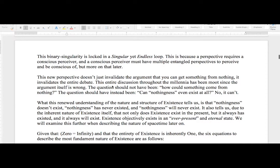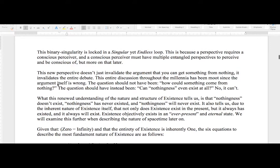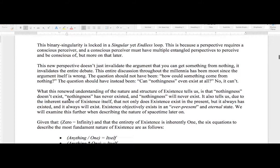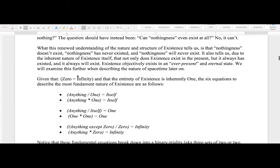This entire discussion throughout the millennia has been moot since the argument itself is wrong. The question should not have been, 'How could something have come from nothing?' The question should have instead been, 'Can nothingness even exist at all?' And no, it can't. What this renewed understanding of the nature and structure of existence tells us is that nothingness doesn't exist. Nothingness has never existed, and nothingness will never exist. It also tells us, due to the inherent nature of existence itself, that not only does existence exist in the present, but it always has existed and it always will exist. Existence objectively exists in an ever-present and eternal state.